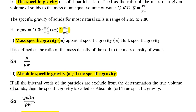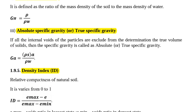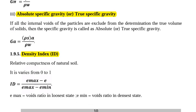Next we will see mass specific gravity, also known as apparent specific gravity or bulk specific gravity. It is defined as the ratio of mass density of soil to the mass density of water, expressed with the symbol Gm. The formula is Gm equal to rho divided by rho W. Next, absolute specific gravity or true specific gravity: if all the internal voids of the particles are excluded from the determination of the true volume of solids, then the specific gravity is called absolute or true specific gravity, expressed as G A. The formula is G A equal to rho S divided by rho W.